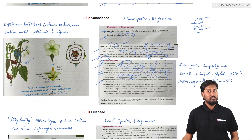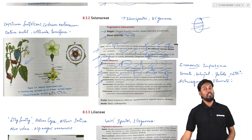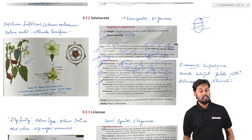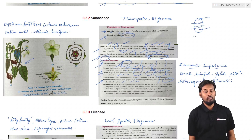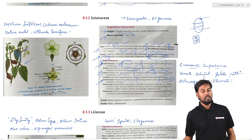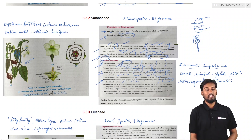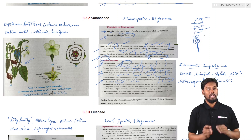The estivation of the corolla in Solanaceae is valvate or twisted in case of Datura. The androecium has five stamens that are epipetalous — fused with or alternating with the petals. The anthers are dithecous — having two lobes — and are basifixed. They are introrse, meaning they open inwards. The gynoecium consists of two carpels, so it is bicarpellary and syncarpous. They are bilocular — having two locules — and rarely unilocular.